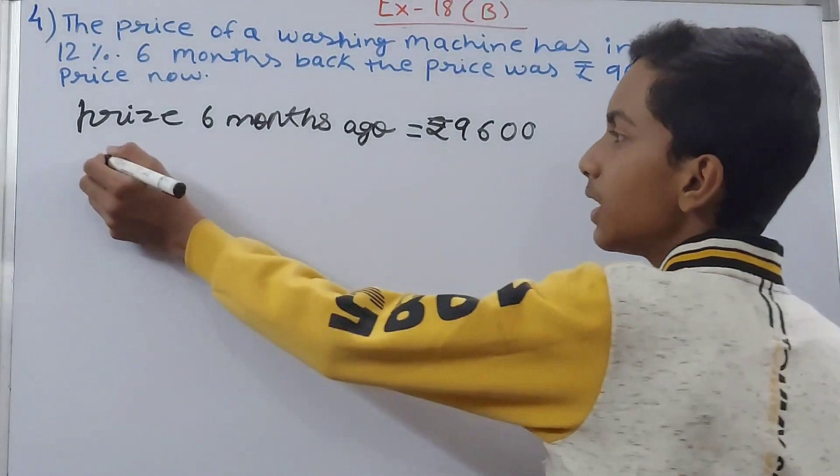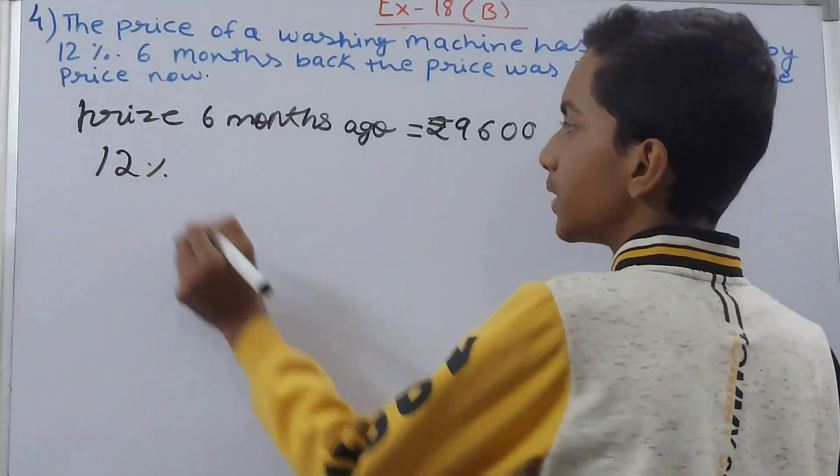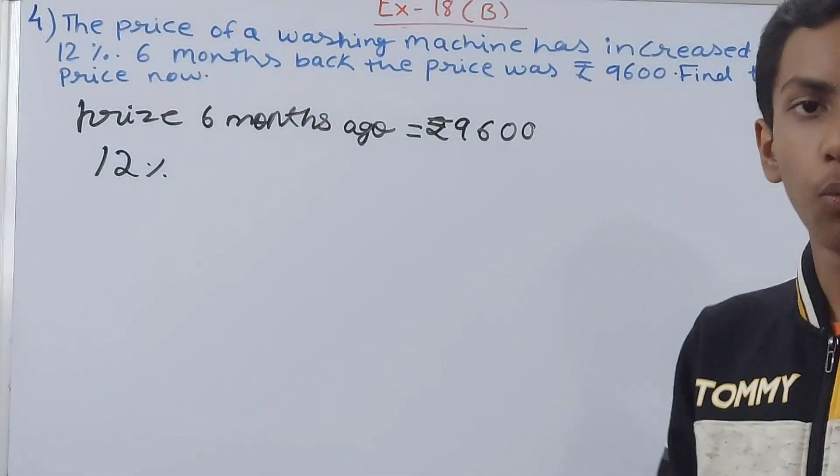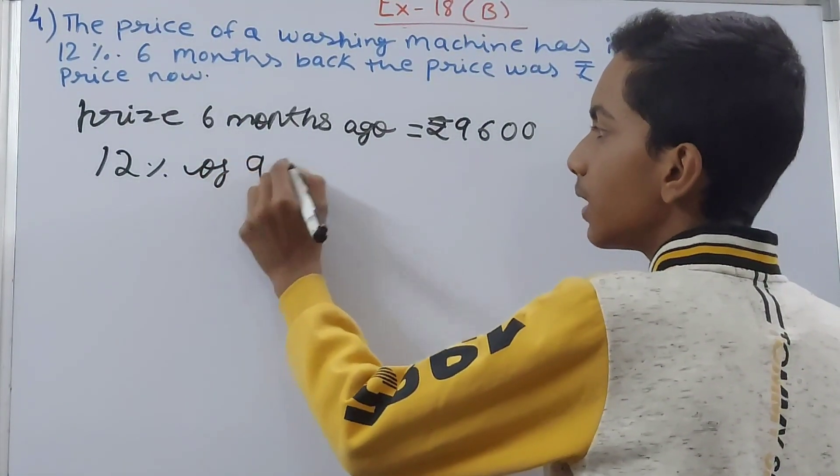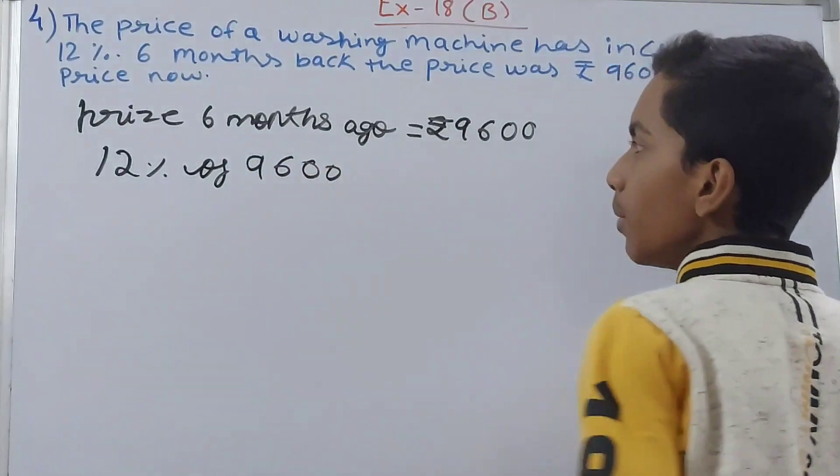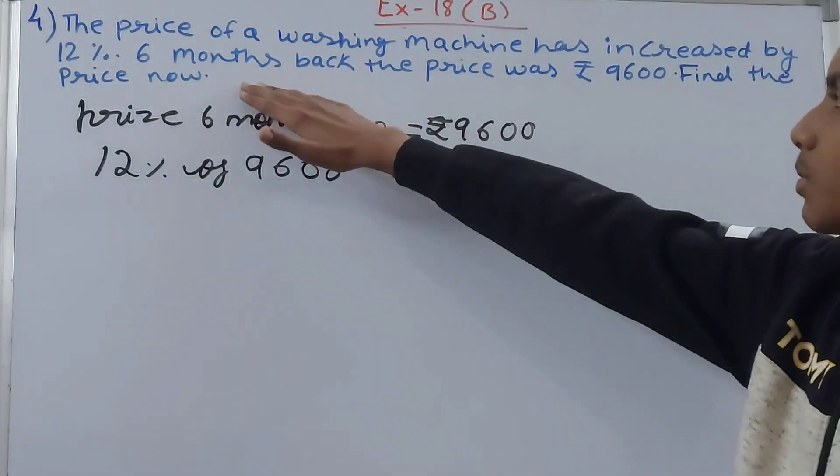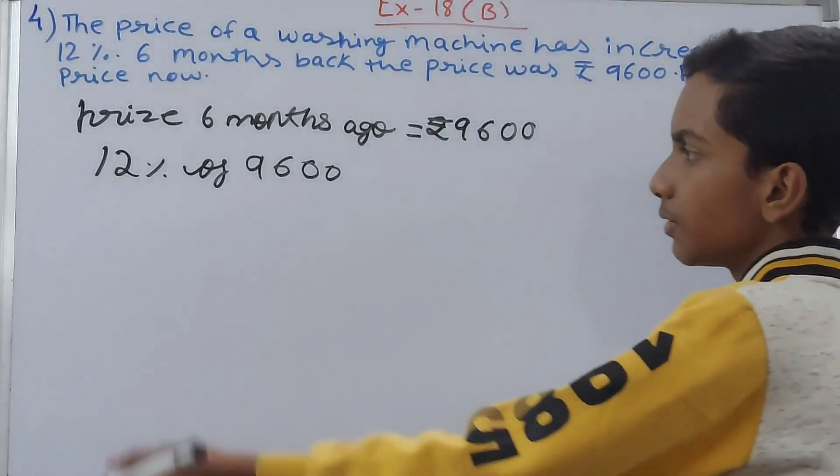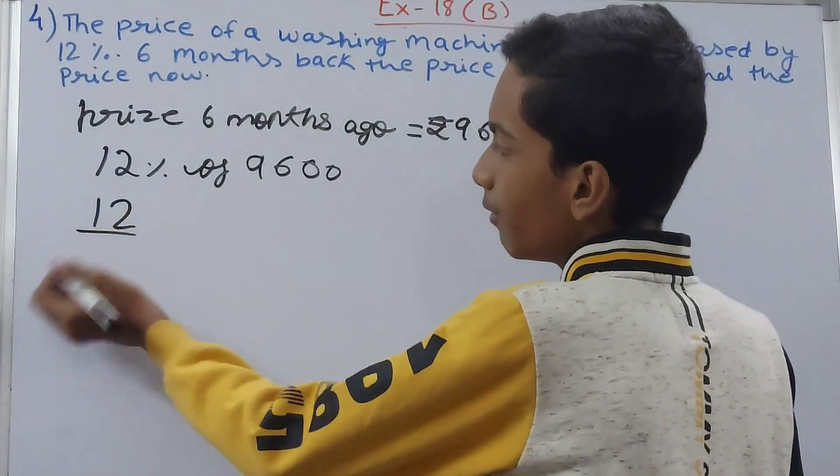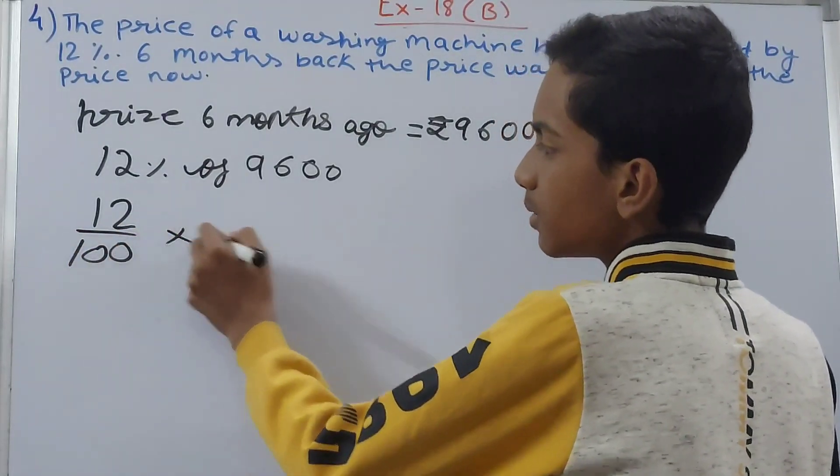We know that it has been increased by 12 percent. Now 12 percent of what? Of course, of 9600, because it is given that it has been increased by 12 percent of that 9600. So it becomes 12 upon 100, multiplication sign, 9600.